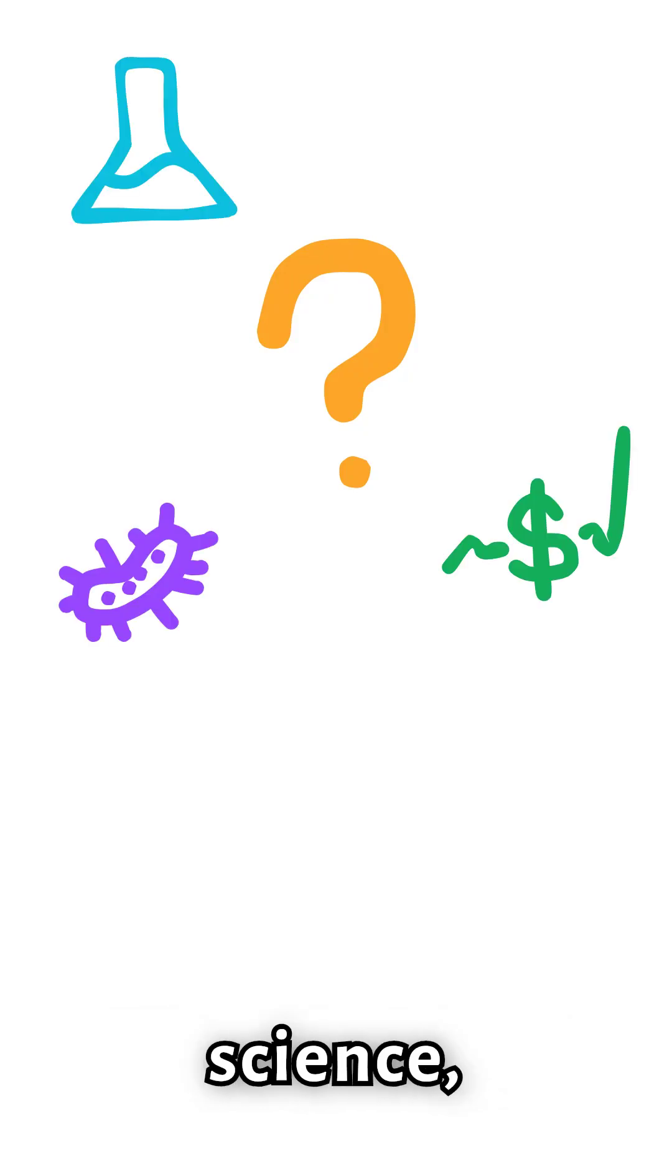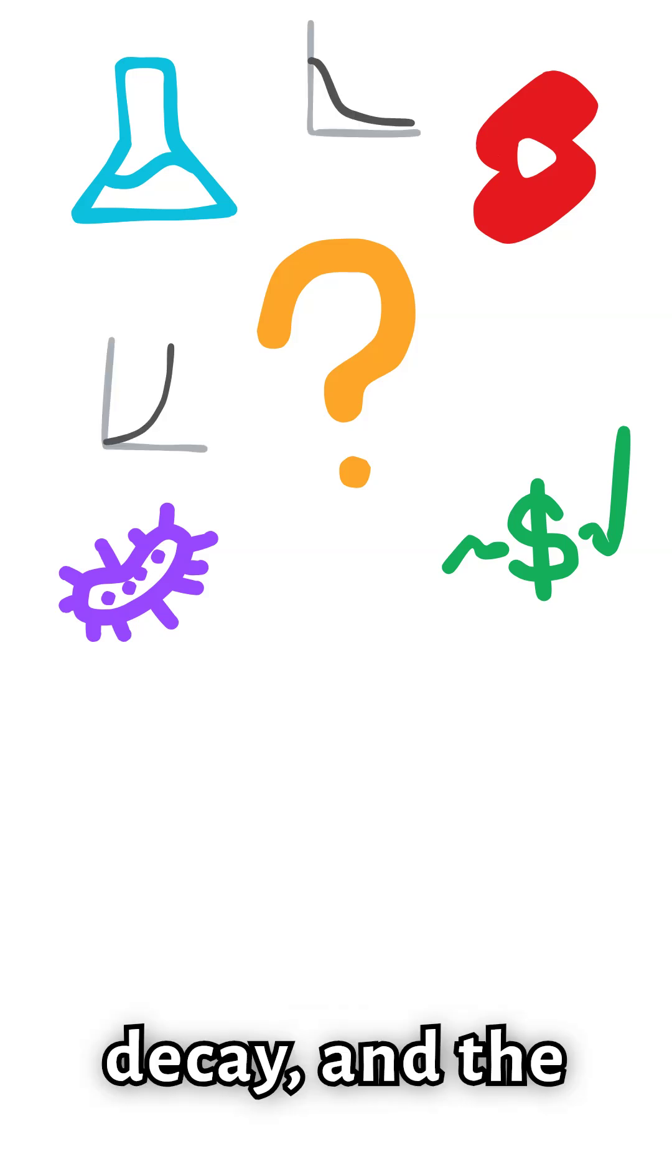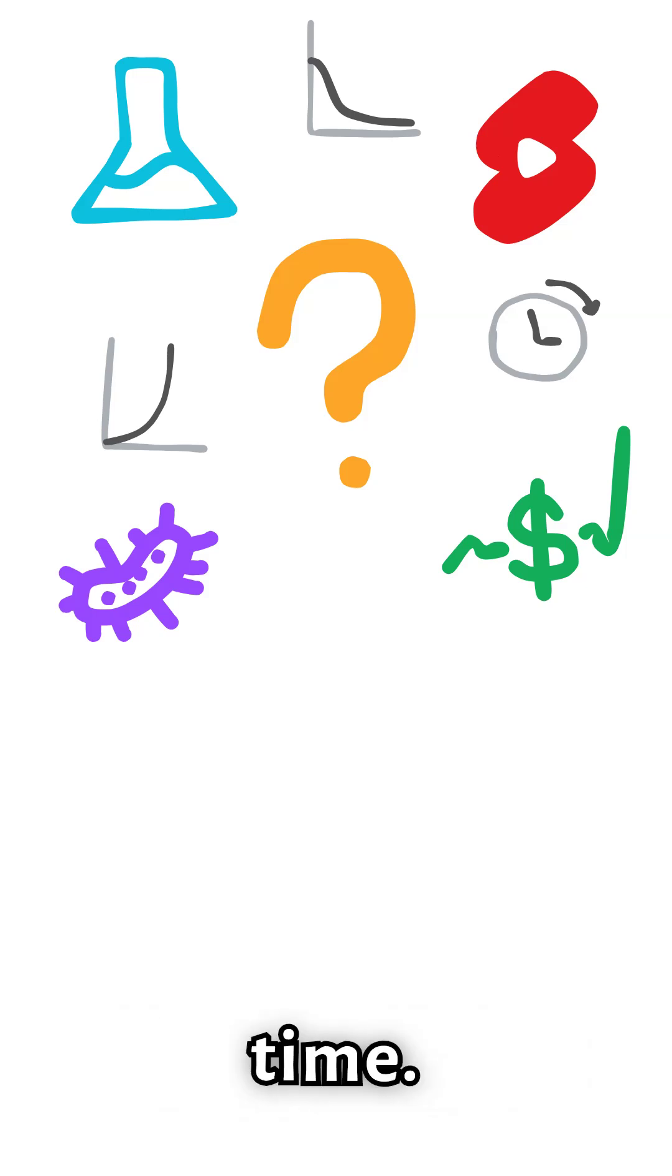What if I told you there's a secret number hidden in nature, money, science, even YouTube Shorts algorithm? A number so powerful it controls exponential growth, decay, and the way things change over time?